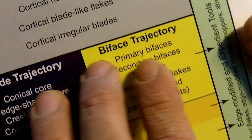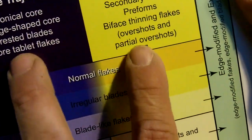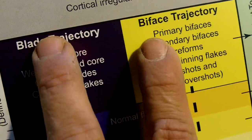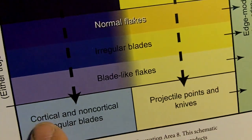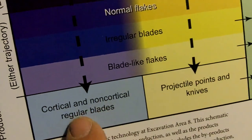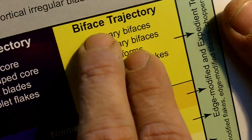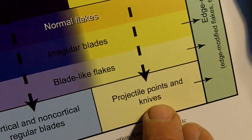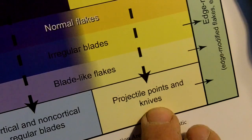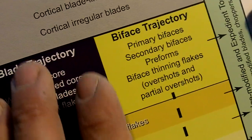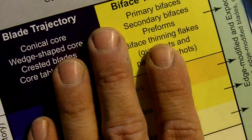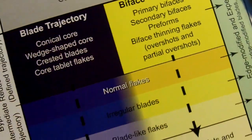These trajectories don't mix together — once it starts as a blade it remains a blade. They call these cortical and non-cortical regular blades. If it was a biface, it became a projectile point or a knife. From a napper's perspective, that's very interesting.